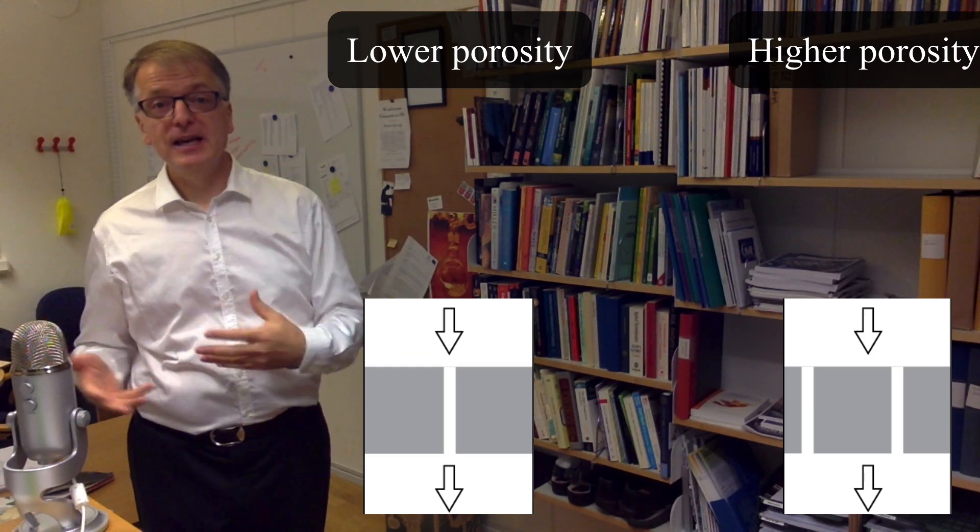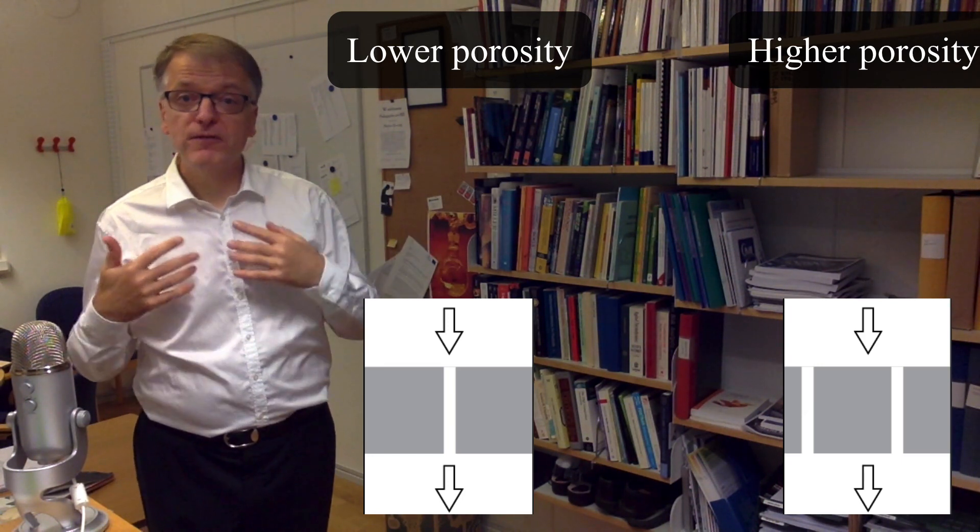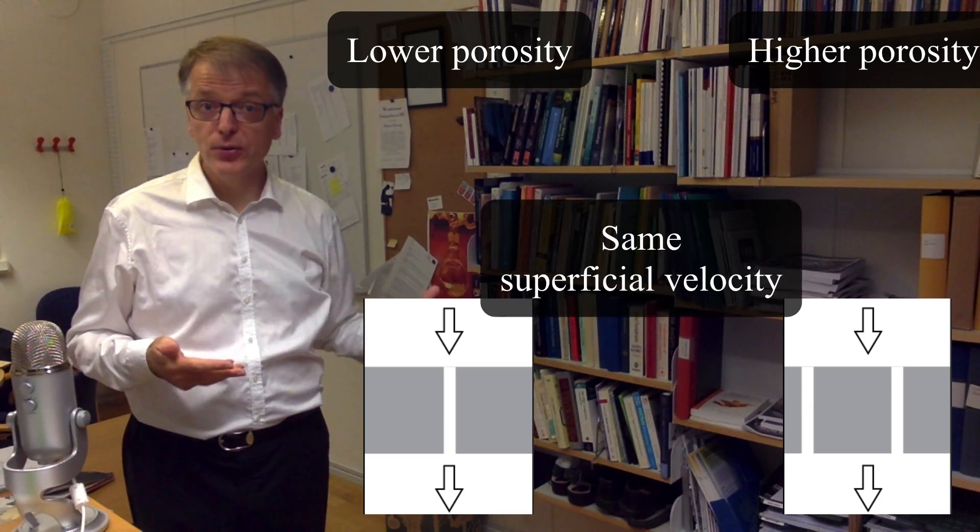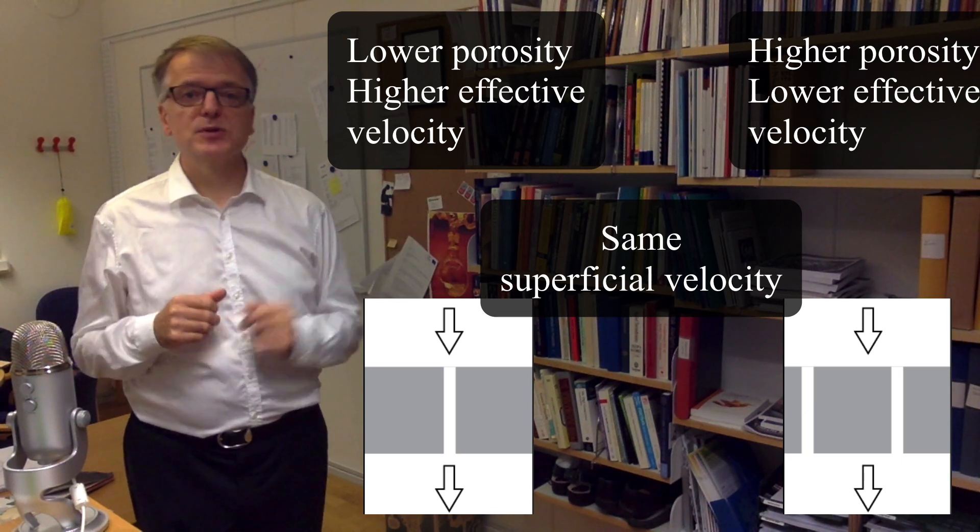So if we let the same volumetric flux flow through both porous medias, the superficial velocity must be the same for both. But the effective velocity, however, must clearly be higher in the less porous media.